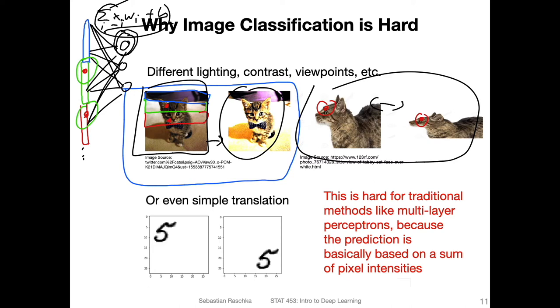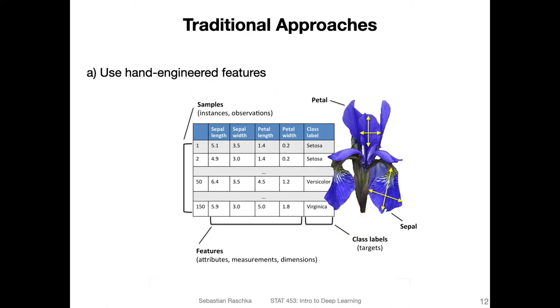So how do we make sure that we get good performance? One solution would be the convolutional network. But before convolutional networks were invented, what were some other strategies? A classic strategy was, for example, doing feature extraction manually.